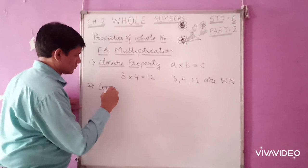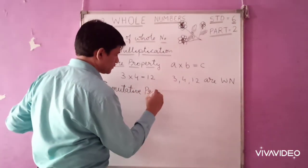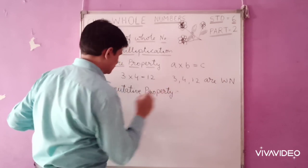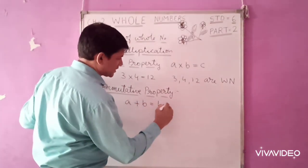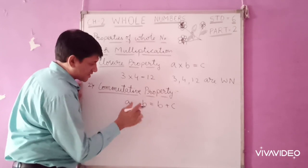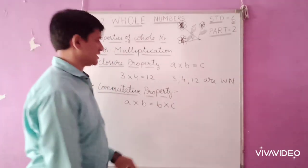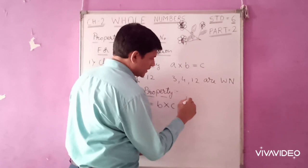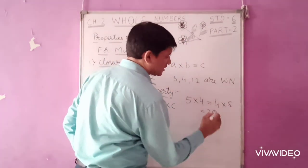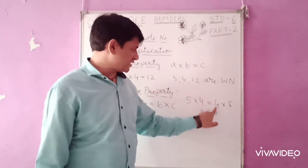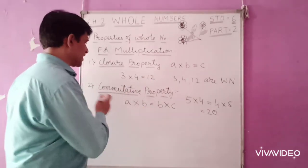The second property is commutative property. For multiplication, a multiplied by b is equal to b multiplied by a. For example, 5 fours are 20, which is the same as 4 fives are 20. Both answers are twenty. So two numbers can be multiplied in any order.